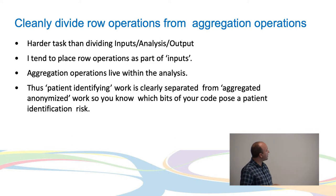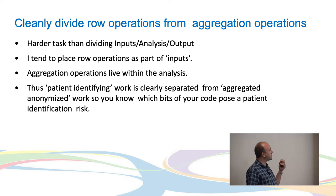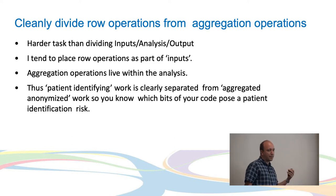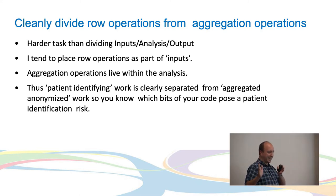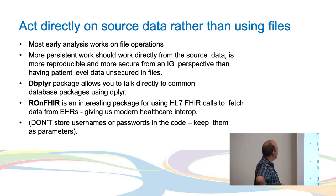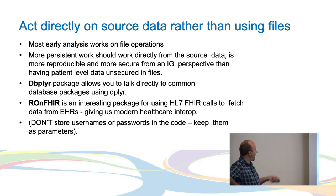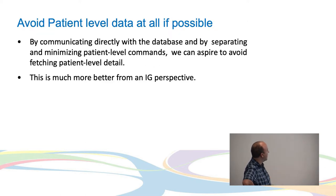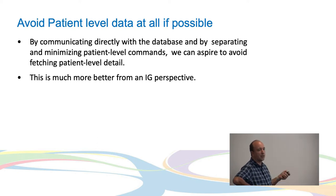One of the things we covered earlier was ensuring that when you do your analysis you break up anything using row-based operations — so patient-level data — from your aggregation operations. Within the package, there's a very clear delineation between anything dealing with row-based stuff versus aggregated stuff. That allows us to ideally move away from having patient-based data anywhere near the aggregated outputs, and to avoid exposing patient-level data to anyone who doesn't absolutely need individual-level data.